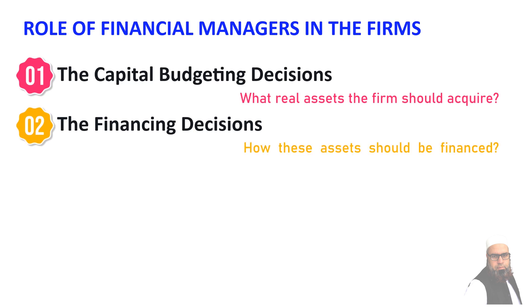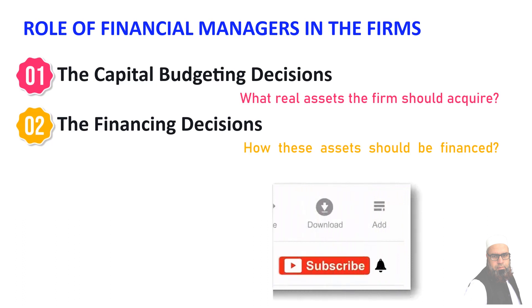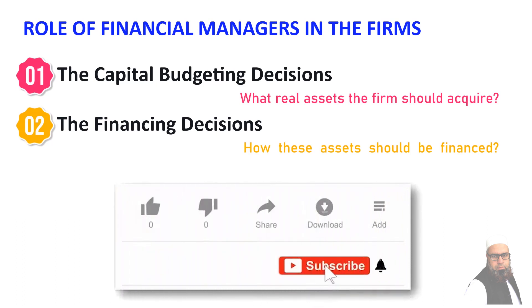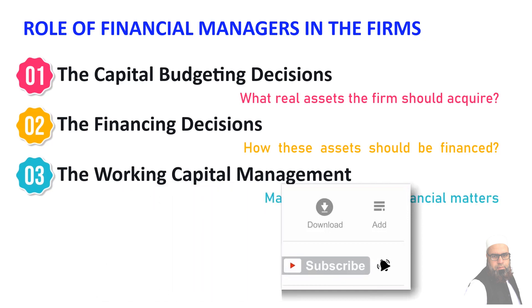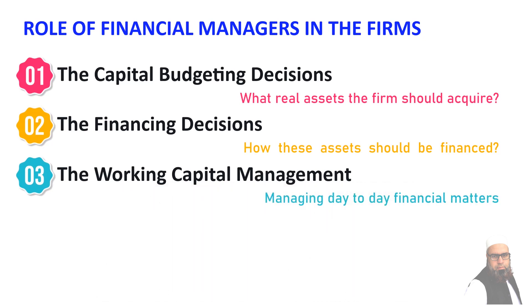Financing decisions involve a trade-off between the advantages and disadvantages of debt and equity financing. The third decision is working capital management, which is about managing day-to-day financial matters. Mismanagement of working capital can cause the firm to go into bankruptcy even though the firm is profitable.